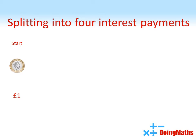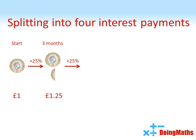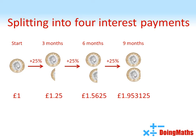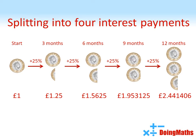Let's try splitting this up more. So now we're going to have four interest payments of twenty five percent each, so again they add up to a hundred, and we're going to get them at three month intervals throughout the year. So again you start off with your pound. We're going to get twenty five percent interest after three months, which takes us to one pound twenty five. We're going to get another twenty five percent after six months, so that takes us to one point five sixty five pounds. After another three months we get twenty five percent again, and at the end of the twelve months we get another twenty five percent, which means we end up with two point four four one four zero six pounds — roughly two pound forty four. So again that money has increased.